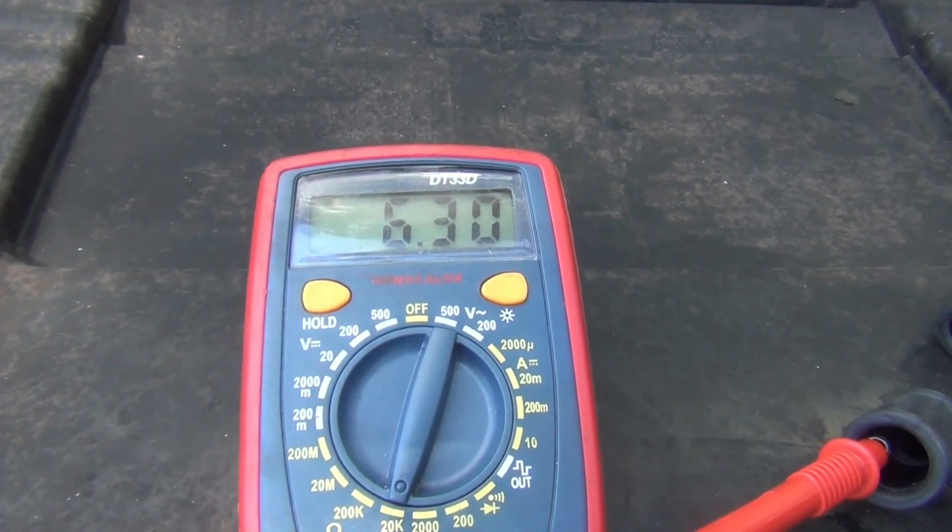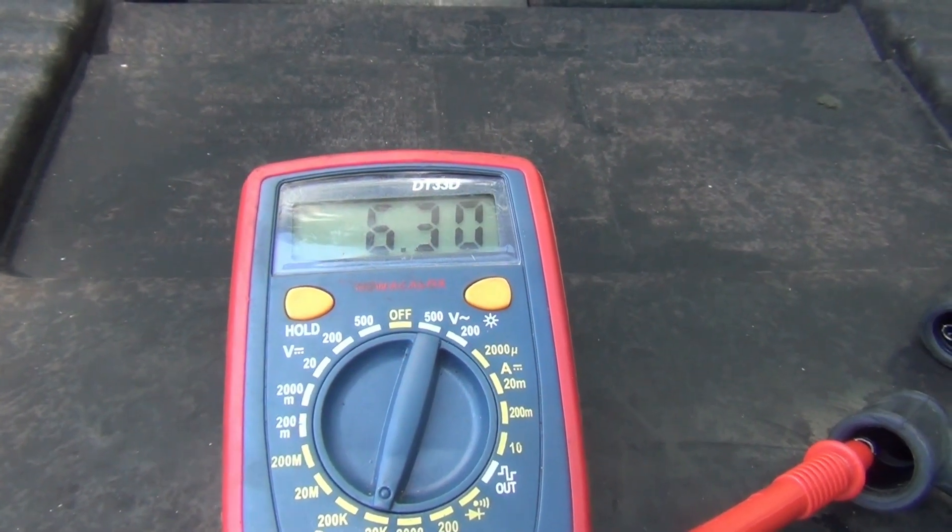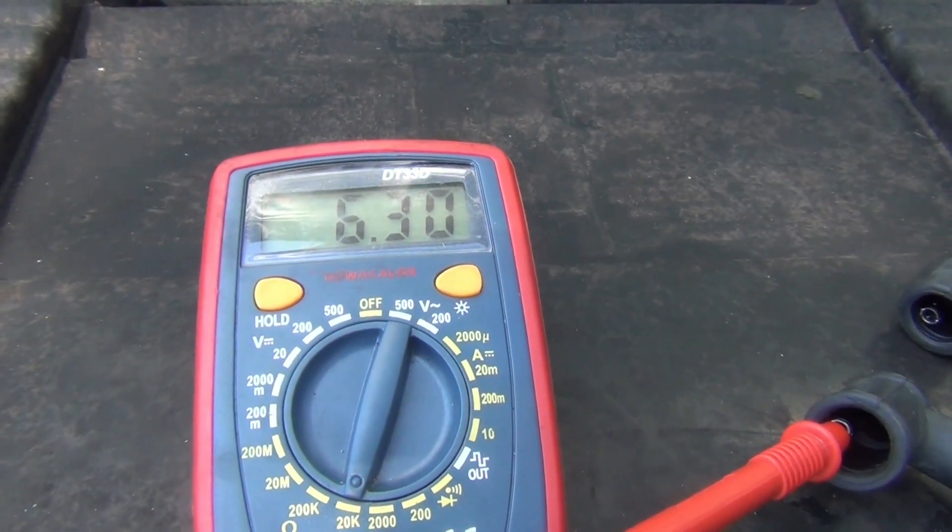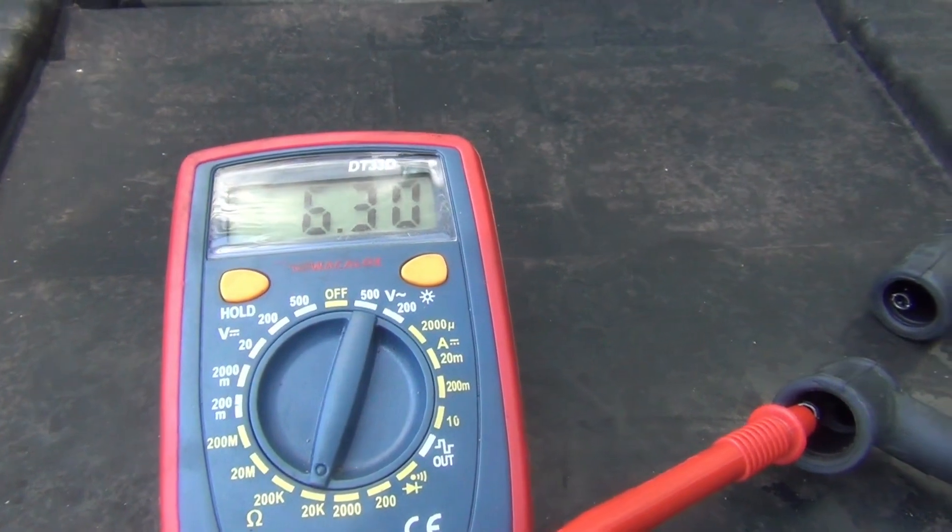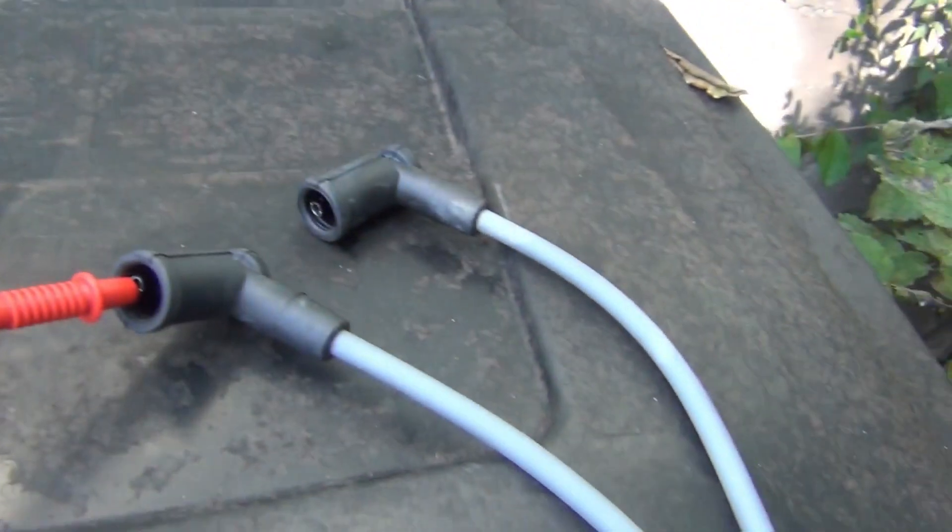I'm getting a reading of 6.30, which is a higher resistance because it's longer than the short one.